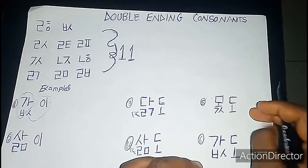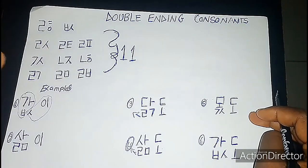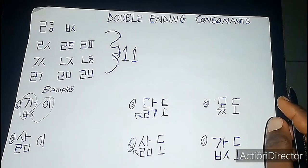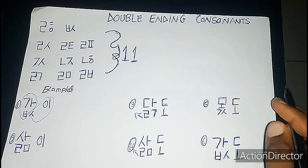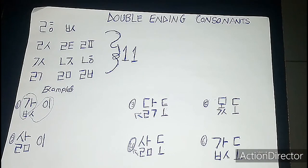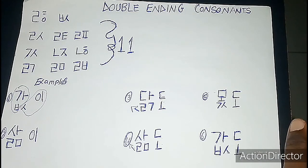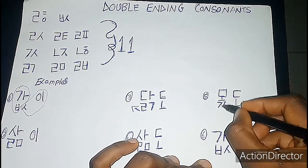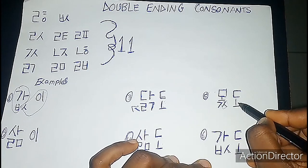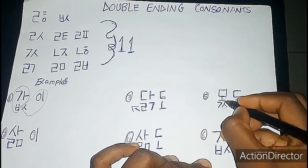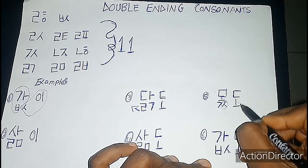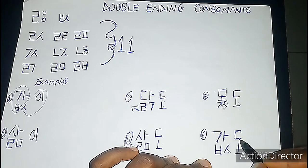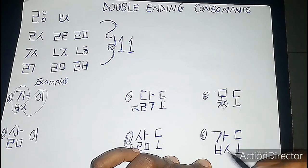There are also exceptions where you throw the second ending consonant away instead of the first. So in that case it would be 'mok-to' — mokto. And this would be 'kap-to' — kapto. You just don't pronounce the second one because you can't physically pronounce both consonants at the same time.